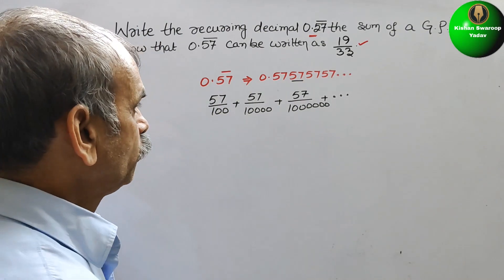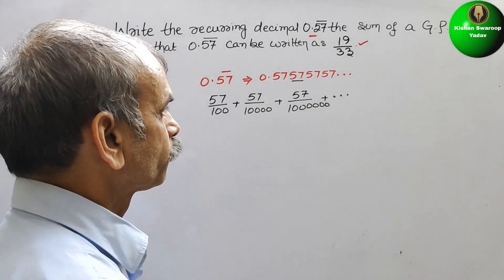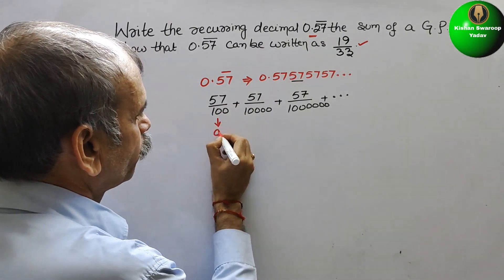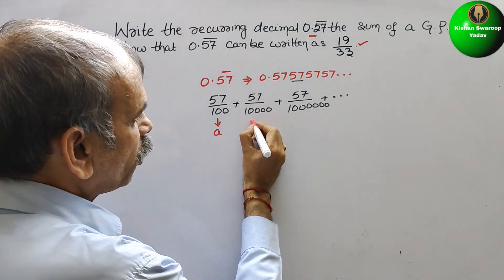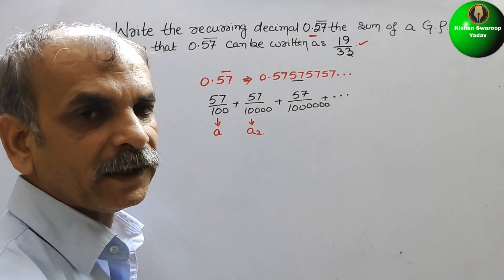So now, you can see, this is your A. This is your A2. So now we will find out R.